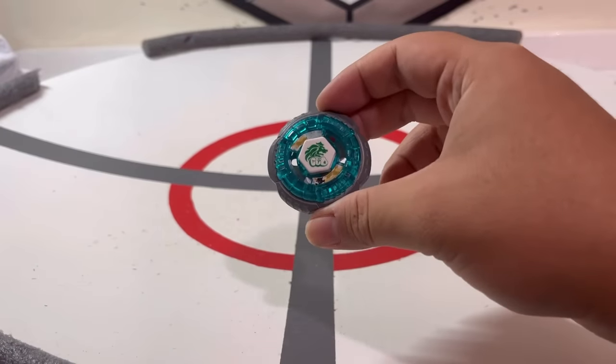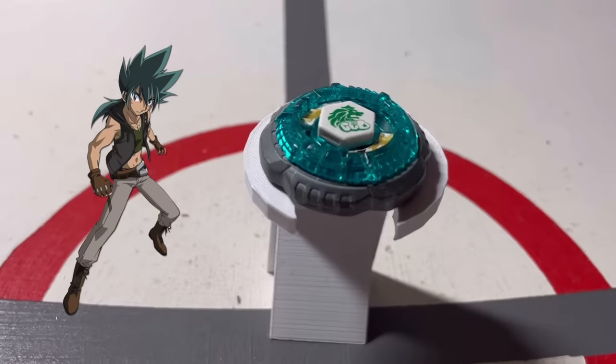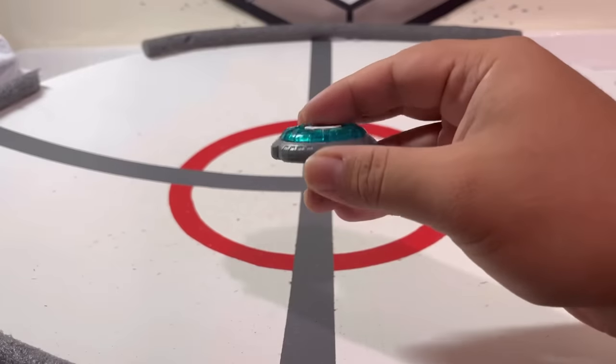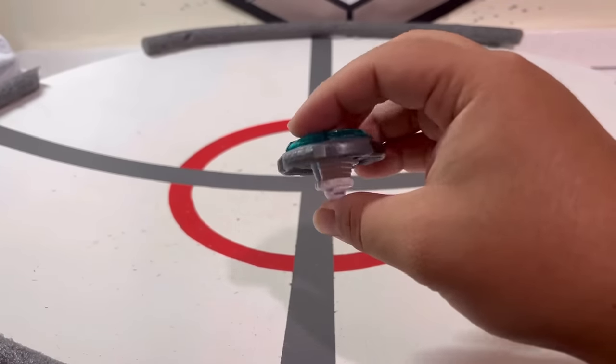Our second stage will be against Rock Leon, a right-spinning defense type Beyblade owned by Kiyoya in the anime. Kiyoya was Jinka's biggest rival being able to compete against him throughout the whole show.